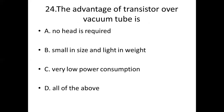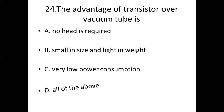Question 24: The advantage of a transistor over a power vacuum tube is? Option A: no heat is required. Option B: small in size and light in weight. Option C: very low power consumption. Option D: all of the above. Answer: Option D — all of the above.